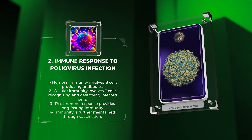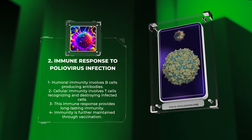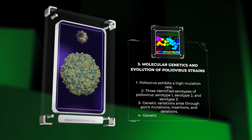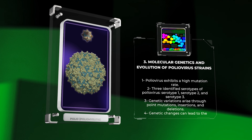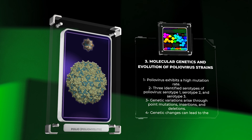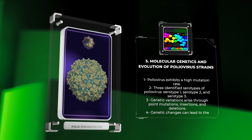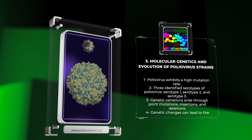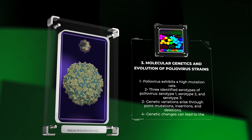We will now explore the molecular genetics and evolution of poliovirus strains. Poliovirus, like many other RNA viruses, exhibits a high mutation rate due to the lack of a proofreading mechanism during its replication process. As a result, various poliovirus strains, known as serotypes, have emerged over time. There are three identified serotypes of poliovirus: serotype 1, serotype 2, and serotype 3.